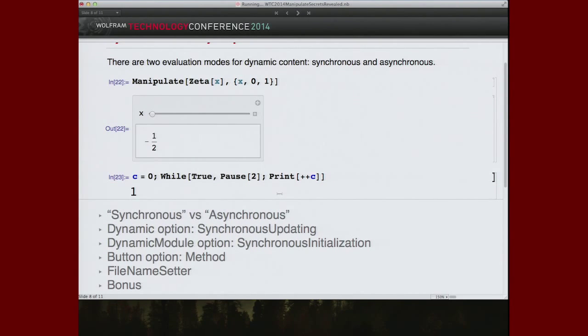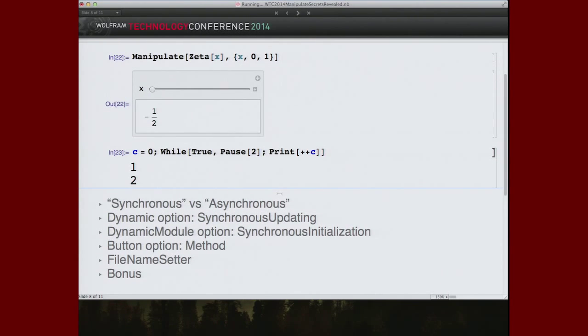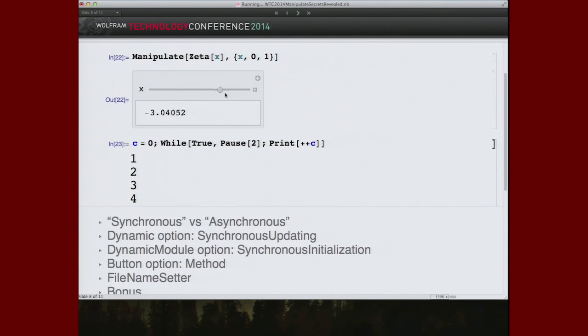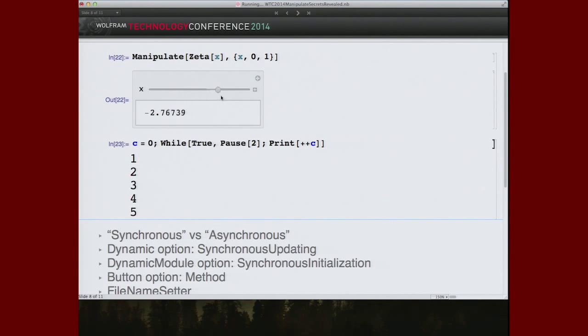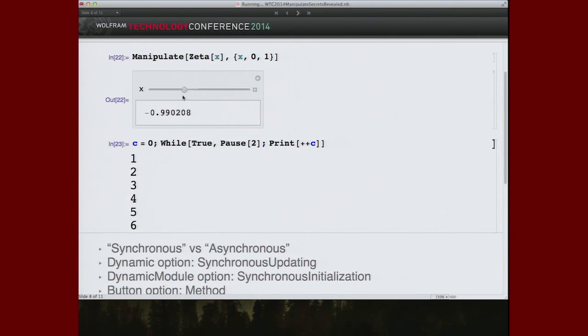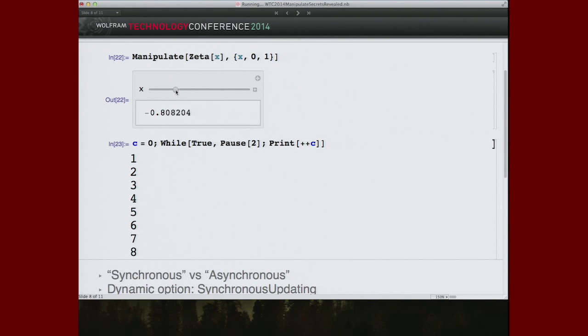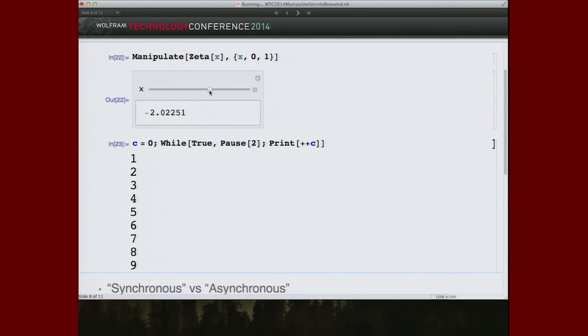While the kernel is saturated, sitting in this while loop, doing nothing but waiting and printing, I can still interact with an interface that goes off and uses the kernel. How is this happening? What features are built into Mathematica that allow this kind of thing to happen? It's the communication over multiple links that's the key.